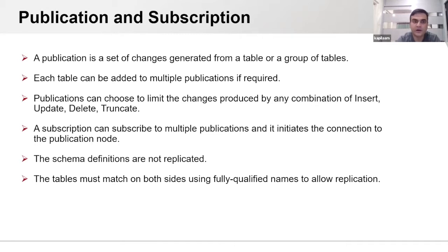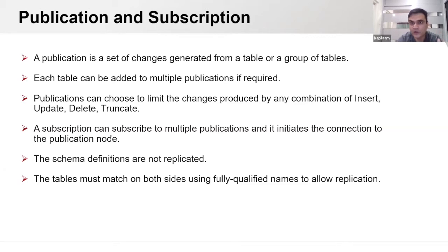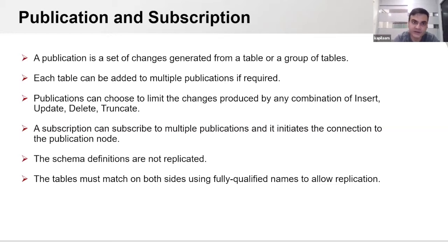A publication is a set of changes generated from a table or group of tables. In future it could be a group of objects like sequences or schemas. Basically, a publication is a way to generate the set of changes for a defined group of objects. Each table can be added to multiple publications if required. We can also define which operations' data we need — like insert, update, delete, or truncate — or all operations.